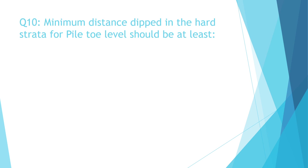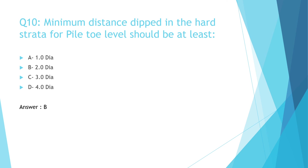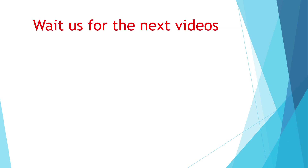Question 10: Minimum distance dipped into hard strata for pile toe level should be at least: a) 1 diameter, b) 2 diameters, c) 3 diameters, d) 4 diameters. The correct answer is b) 2 diameters. Thank you for watching and follow us for the next video.